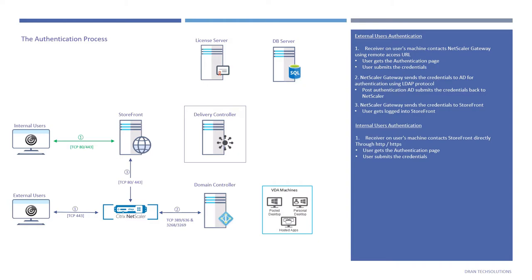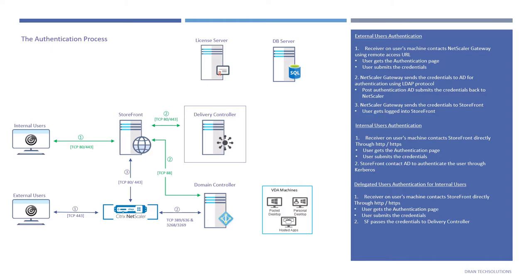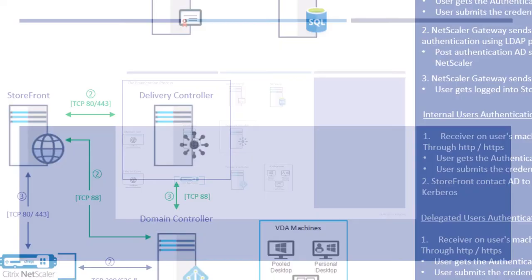Now for internal users: the user enters the URL and submits their credentials. StoreFront contacts Active Directory to authenticate the user through Kerberos. There is also a type of authentication only for internal users called Delegated User Authentication. In this process, Receiver on the user's machine contacts StoreFront directly through HTTP or HTTPS. The user gets the authentication page and submits credentials, but this time StoreFront passes the credentials to the Delivery Controller, and the Delivery Controller authenticates the user with the domain controller using Kerberos. After authentication, Delivery Controller sends a success response to StoreFront and the user is logged into the store. Authentication process ends here.